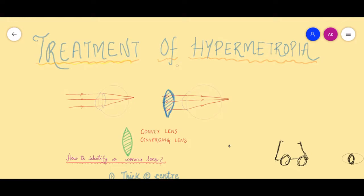As we already know, in hypermetropia the rays of light coming from infinity get focused behind the retina because the eyeball is smaller, the cornea is flatter, or the eyeball is not very strong — that is, it is weaker. So obviously the treatment would be to make this weaker eyeball a little bit stronger, and we do that by prescribing these patients convex lenses.